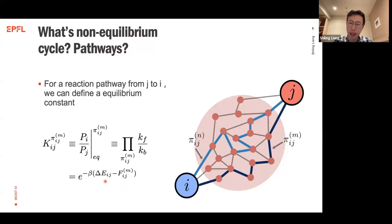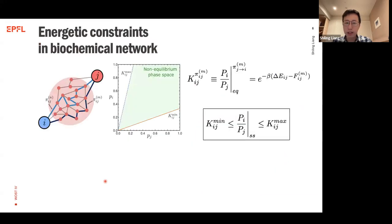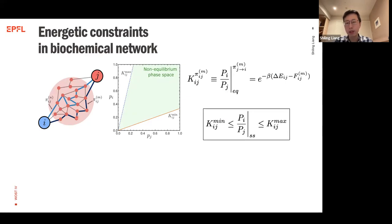For a complex network, we can always define many pathways, and each pathway gives an equilibrium constant determined solely by the thermodynamic property of the pathway — not by the kinetic details. Different pathways may therefore have different equilibrium constants. If we find two pathways with different equilibrium constants, we can combine them to form a cycle with nonzero thermodynamic affinity, meaning the system is out of equilibrium.